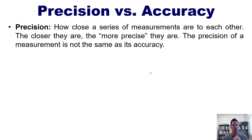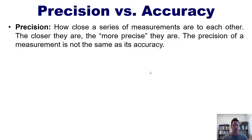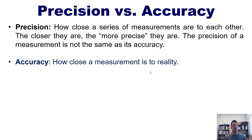In the science world, precision is how close a series of measurements are to each other. The closer they are, the more precise they are. The precision of a measurement is not the same, in science at least, as its accuracy. Accuracy is how close a measurement is to reality.